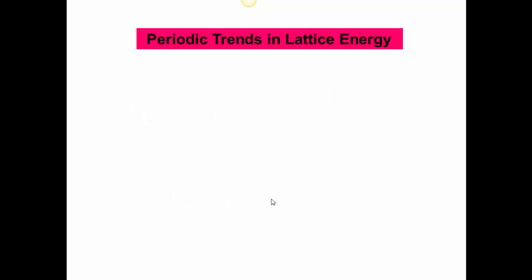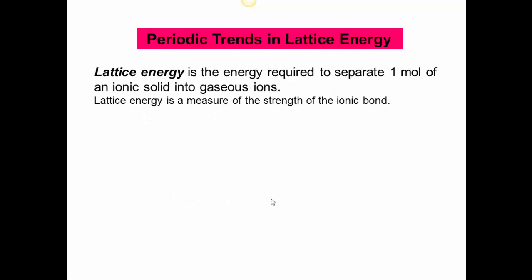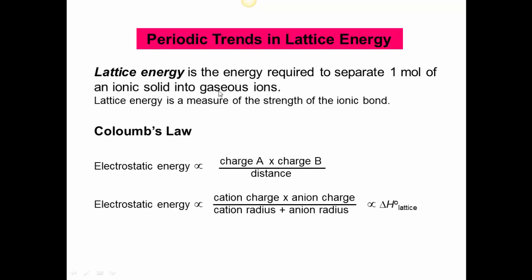I also wanted to briefly mention periodic trends of lattice energy. So lattice energy is the energy required to separate one mole of an ionic solid into gaseous ions. So lattice energy is the measure of the strength of the ionic bond. And we can determine the lattice energy for an ionic bond using Coulomb's law. Coulomb's law just measures the force between two charges. And that's all an ionic bond is, is it's just the force between a cation and anion.